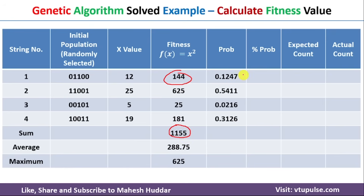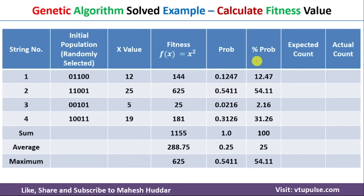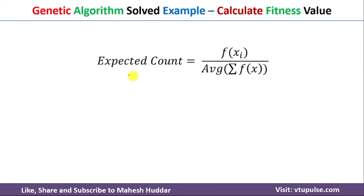144 divided by 1155 gives the probability for chromosome 1; similarly 625/1155 and so on for all chromosomes. The sum of all probabilities equals 1, the average is 1/4, and the maximum probability is 0.5411. Converting to percentages by multiplying by 100, we get the probability values. The next step is to calculate the expected count using the formula: expected count = f(xᵢ) / average of f(xᵢ).